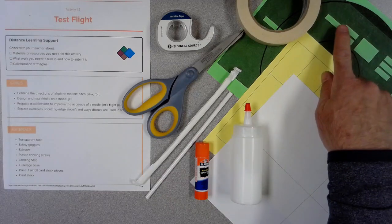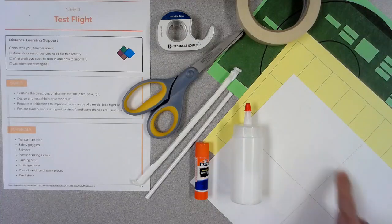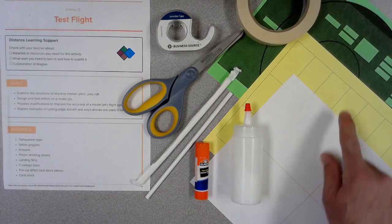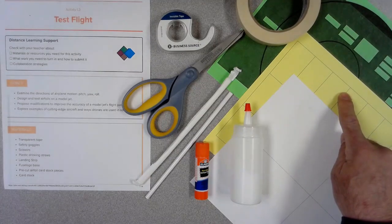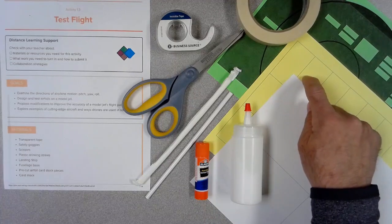You'll need your printout of your landing strip eventually. You'll need the fuselage base, which is the piece of paper that has four large rectangles on it. You'll need your pre-cut airfoil cardstock, that's the piece that has 24 small rectangles on it.